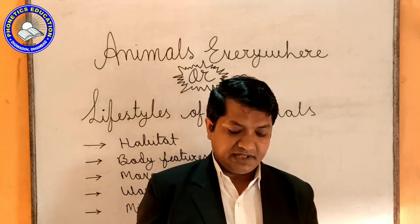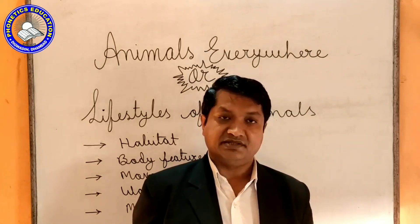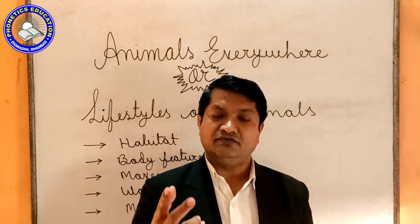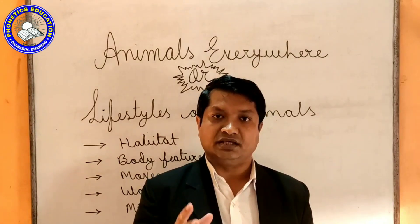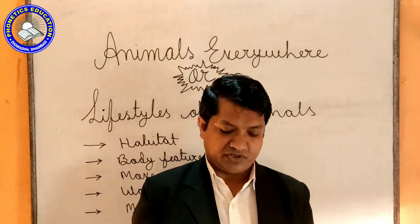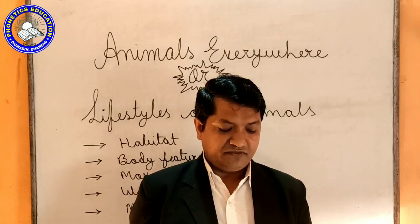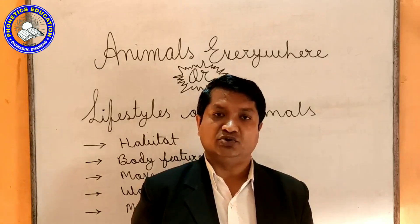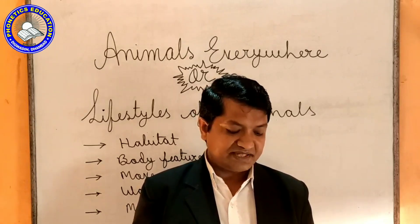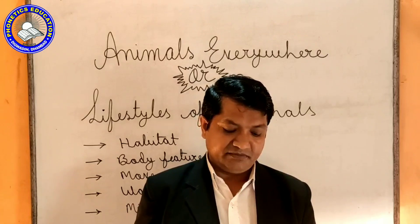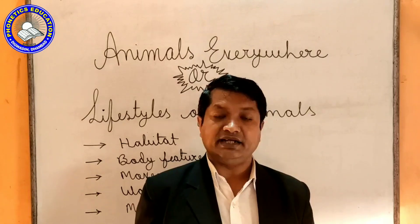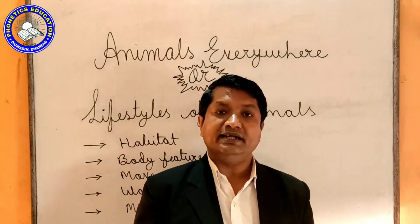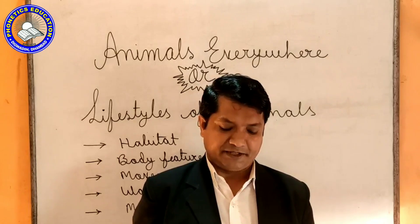Most terrestrial animals have four limbs. Jaada tar jo terrestrial animals hote hain, unke 4 limbs hote hain. The front limbs are called forelimbs — jo aage ke do pair hote hain, woh forelimbs kehlaate hain. And the back limbs are called hind limbs — aur jo peeche ke do pair hote hain, unhe hind limbs kaha gaya hai.